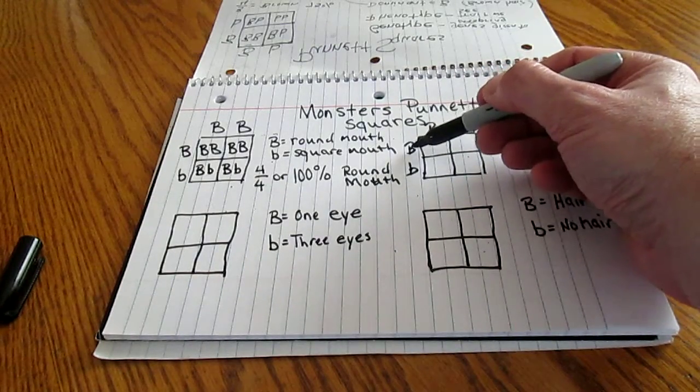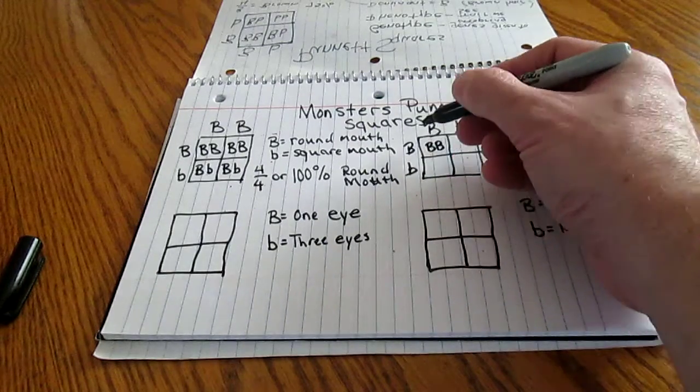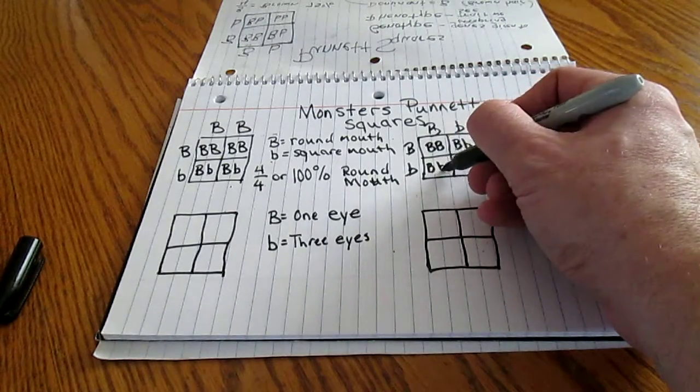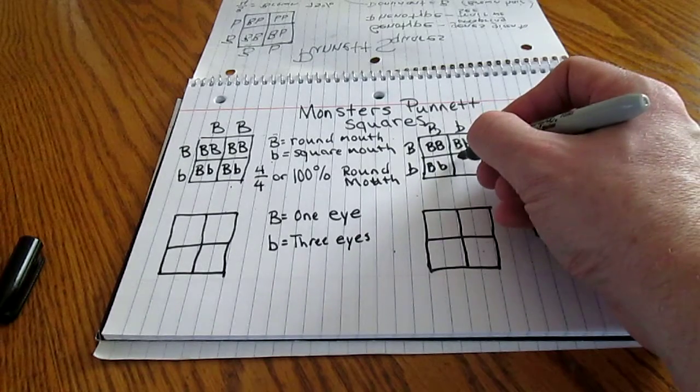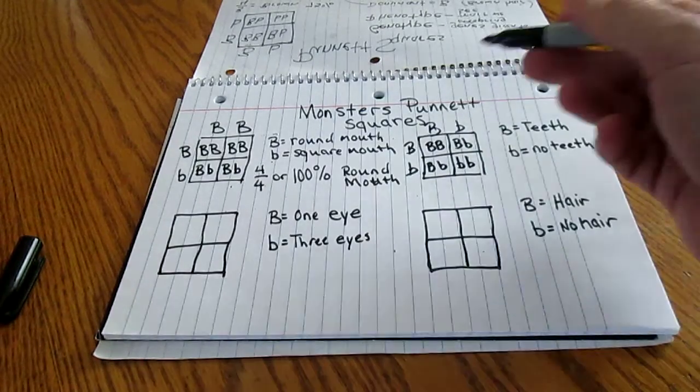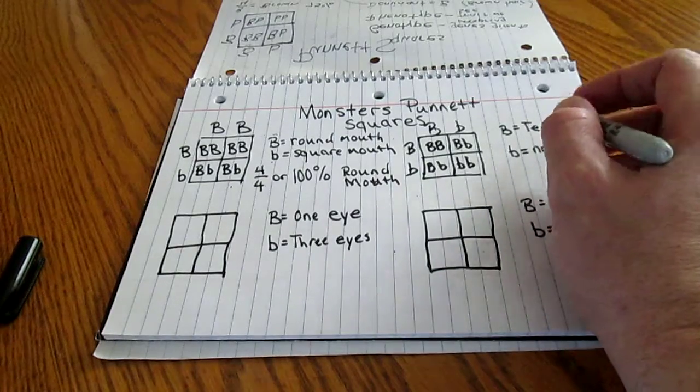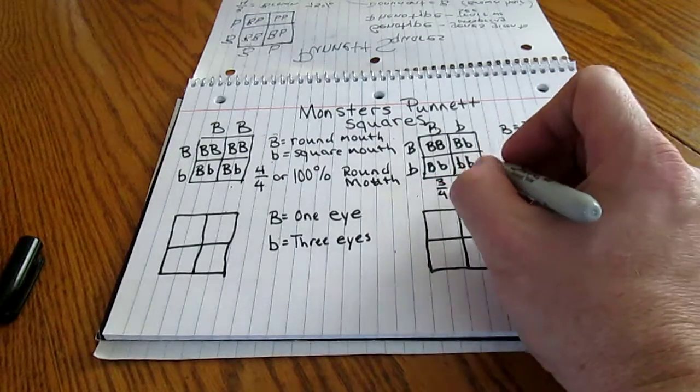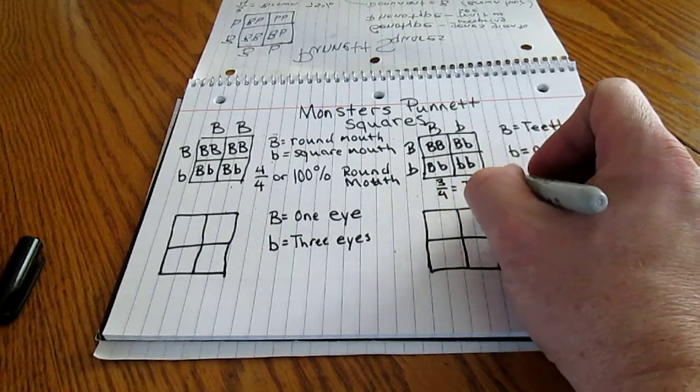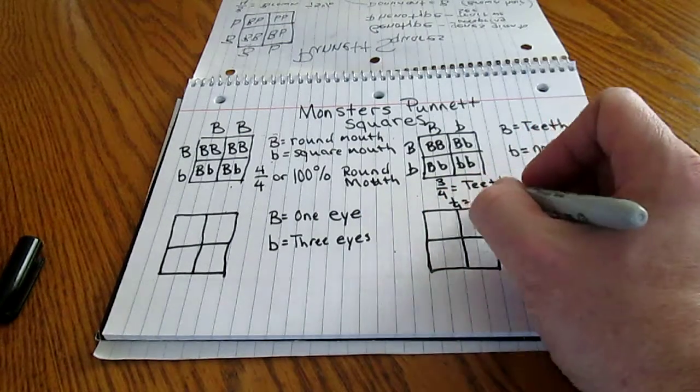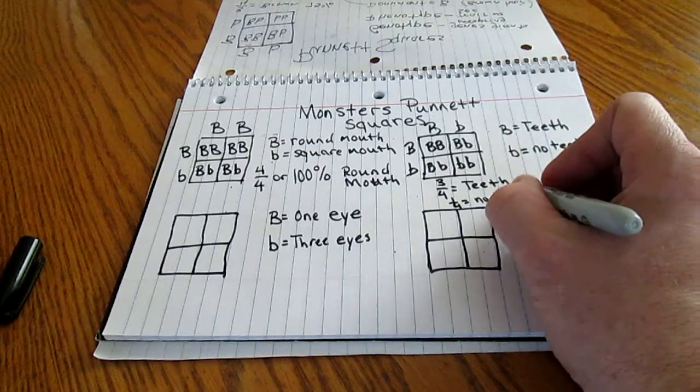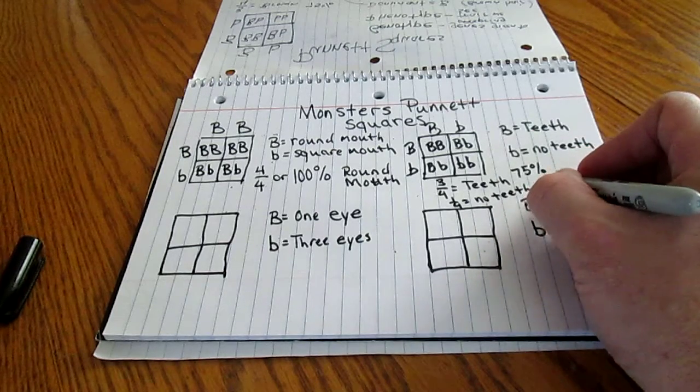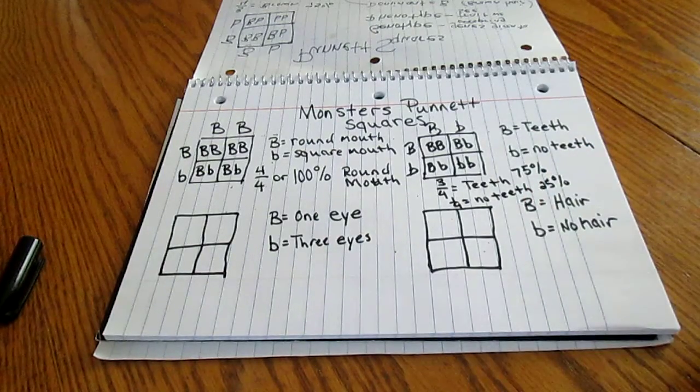Now I have to combine them. The way to do that is you have to look B and b. That gives me the first box. Big B, little b gives me the second box. My third box, again, is big B, little b. And my last box is going to be little b, little b. So, in this particular case, whether or not they're going to have teeth. If we were to have four children, or four offspring, three of the four would more than likely have teeth. One out of four would have no teeth. So, this one would be 75% chance of having teeth, and you'd have a 25% chance of having no teeth.